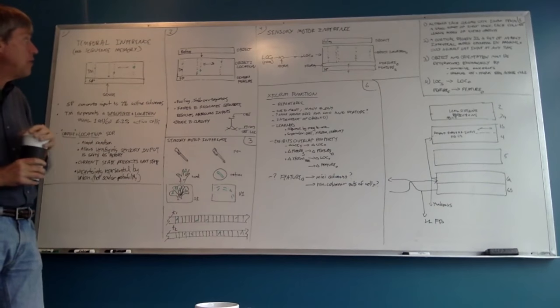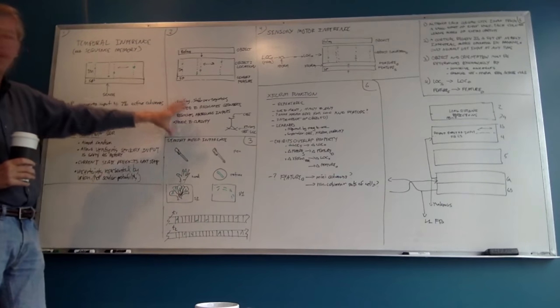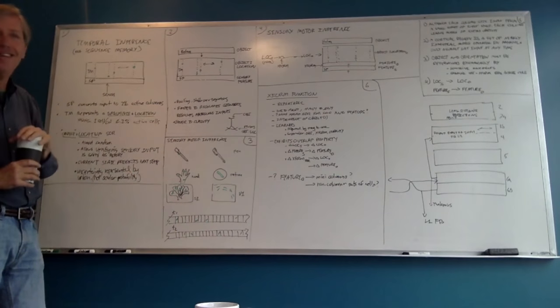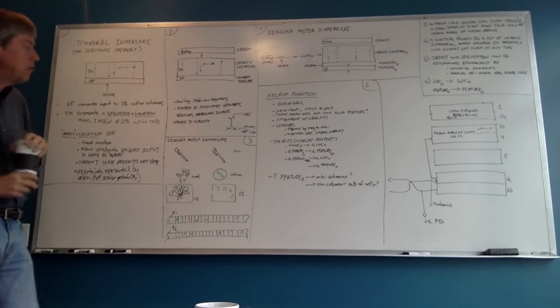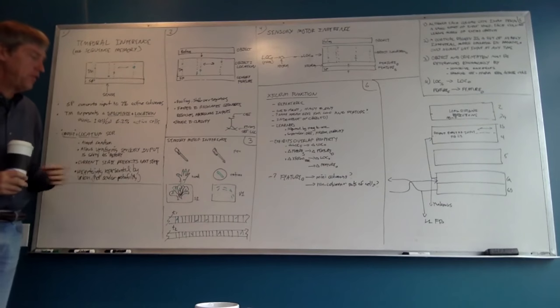In the pyramidal neurons, the horizontal connections would be the basal dendrites, and then the apical dendrites get this object representation. So the cells — this selects a set of cells consistent with the object. That's all temporal memory. Now we're going to talk about sensory motor inference.